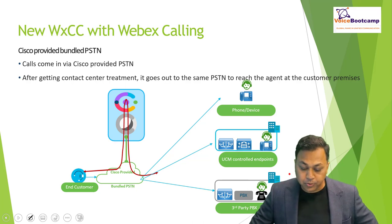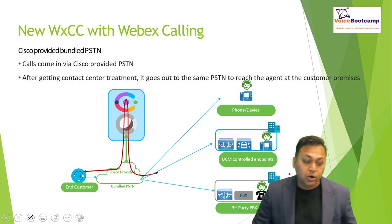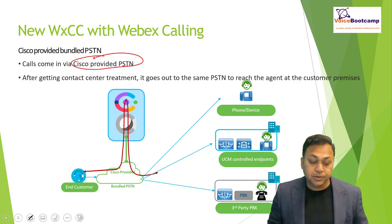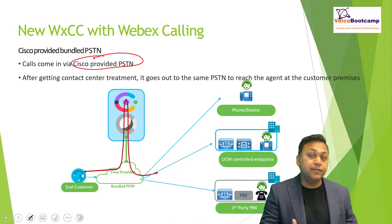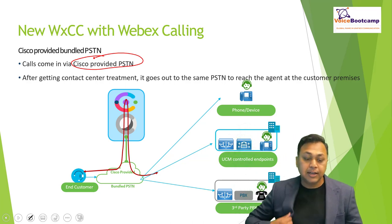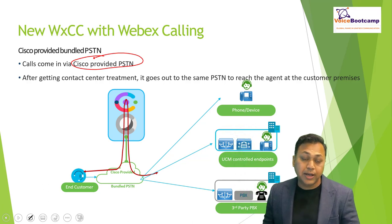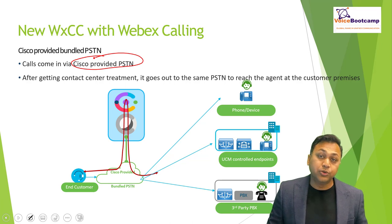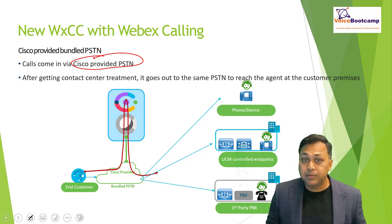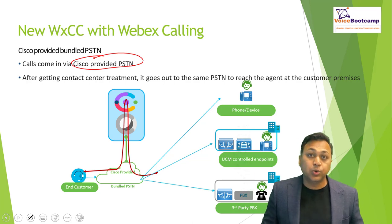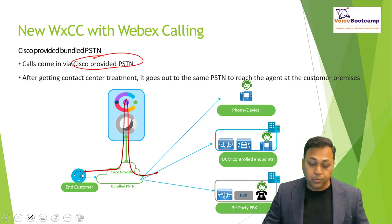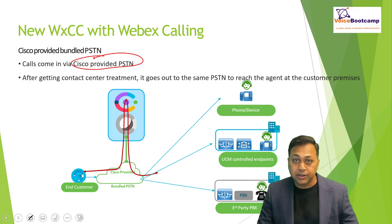For the new WebEx Calling Contact Center scenario, calls will come in via the Cisco-provided PSTN into your contact center. After the IVR welcome message and treatment, when it's time to connect to an agent, the call goes back out through the same PSTN to reach the agent on the customer premises — for example, a Toronto office will use the same PSTN to reach that location.